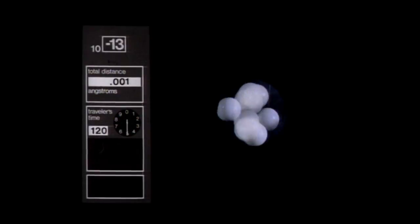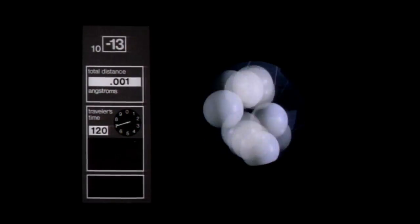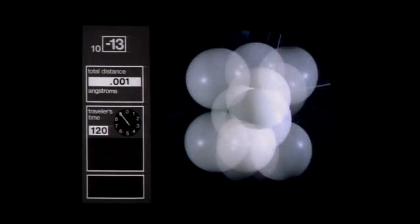Our galaxy is 36 powers of ten larger than the nucleus of a carbon atom. If the diameter of the atomic nucleus were a unit one, then the diameter of the galaxy in atomic units would be ten to the thirty-fifth, or one and thirty-six zeros.